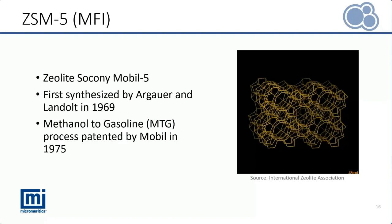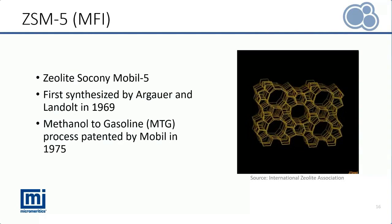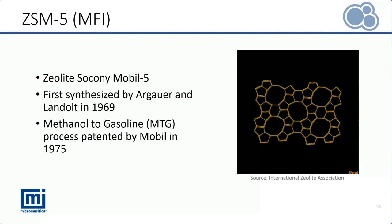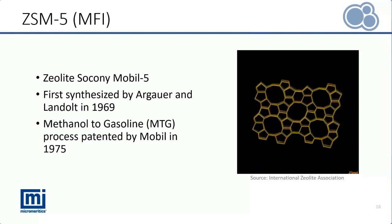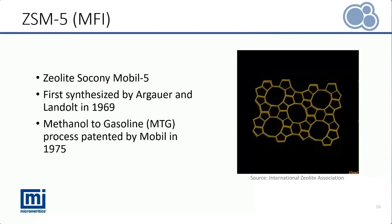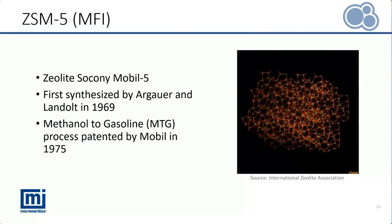Here is a quick animation showing the structure of ZSM-5 provided by the International Zeolite Association, showing projections along different crystallographic axes including the 0,1,0 and 1,0,0 directions, as well as the XY plane view. In the animation, the oxygen atoms are labeled in red and the yellow atoms are either silicon or aluminum.